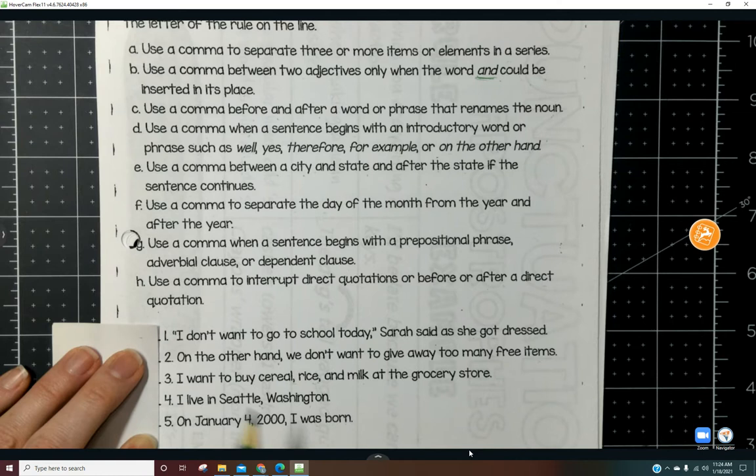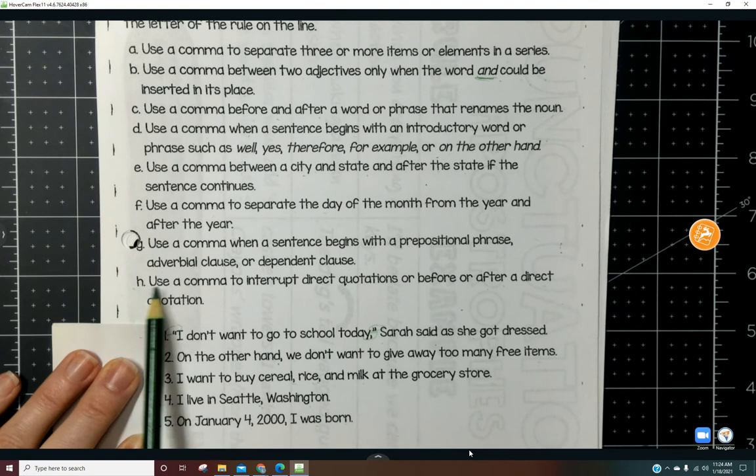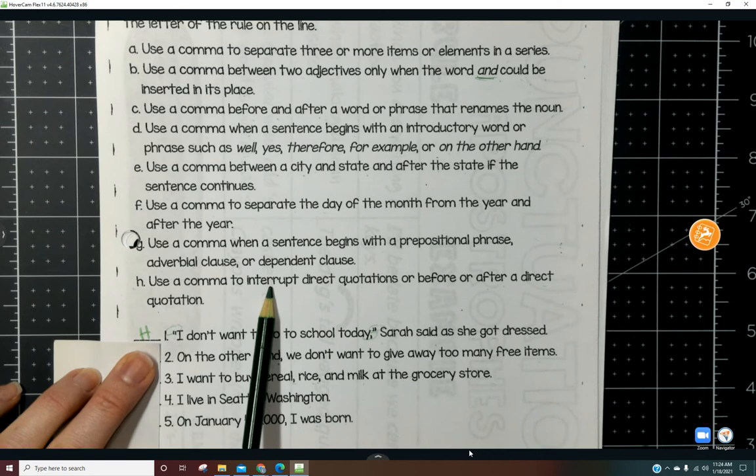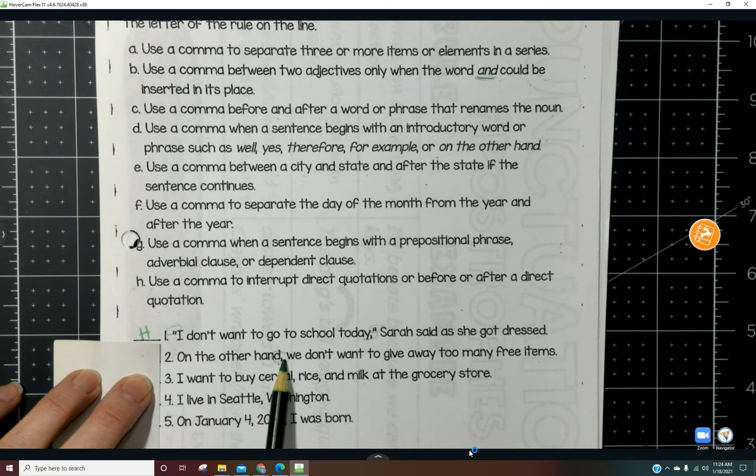So if we go here back to number one: 'I don't want to go to school today.' Well, these are quotations and we have a comma right there. So right here for H, that is our rule. Use a comma to interrupt direct quotes. We didn't do that before, but after a direct quote. So it's at the end of our direct quote.